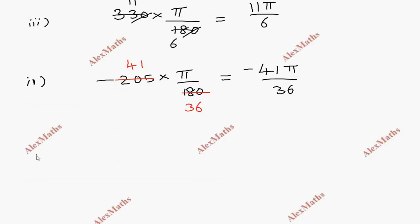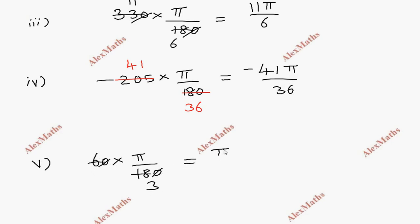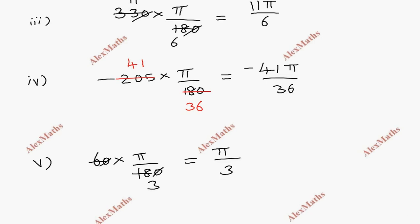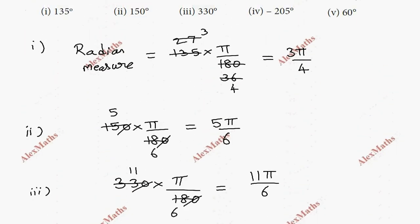For 60 degrees, convert 60 into π/180. Cancel — 60 and 180 simplify by 60. So the answer is π/3. That completes the first part of the conversions.